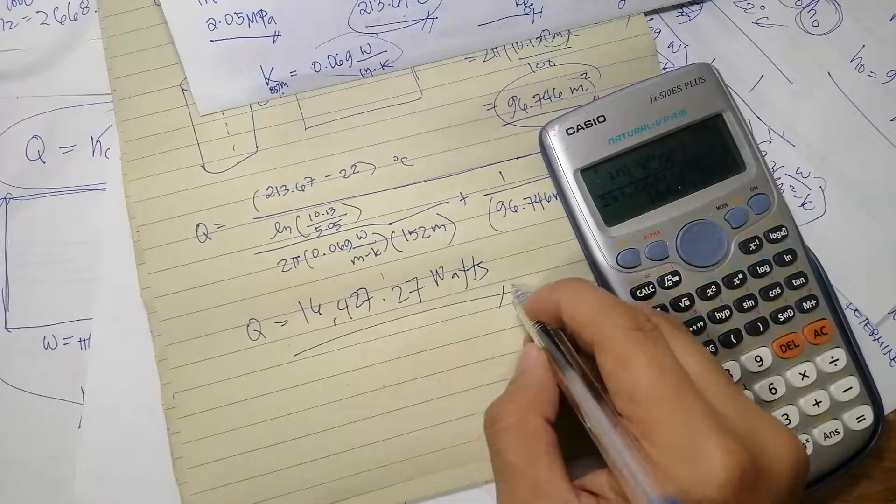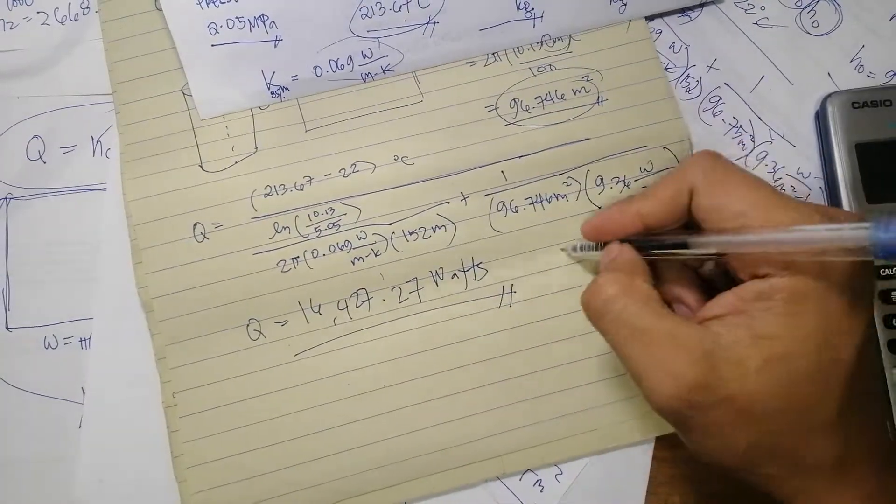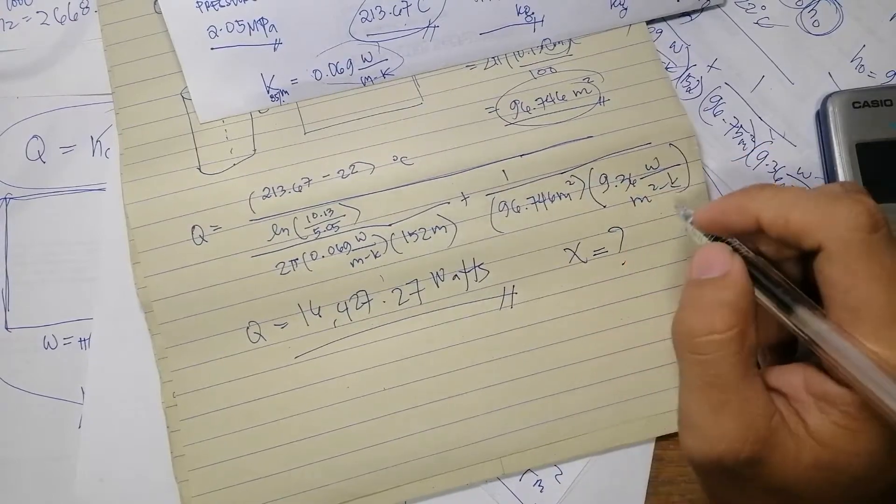So now the heat is equal to 213.67 minus 22 over natural log of 10.13 over 5.05, all over 2π multiplied by 0.069 by 152, plus 1 over 96.746 multiplied by 9.36. So we had a value of 16,427.27 watts. But that is not the question.